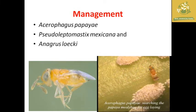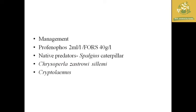For the management of the papaya mealy bug, we can release some predators like Asparagus papaya, as well as parasitoids such as Pseudolopomastis mexicana and Anagyrus loecki. These are some of the parasitoids which can be released at the field level for the control of the papaya mealy bug.